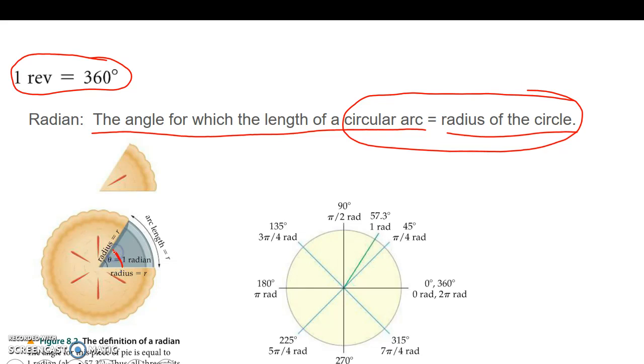One radian is 57.3 degrees. If you have had any kind of pre-calc, you would have seen the unit circle.